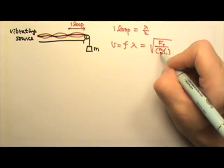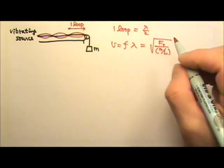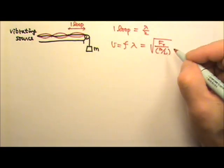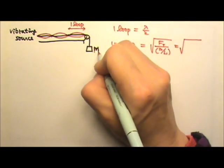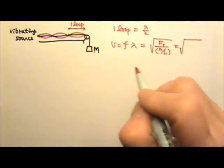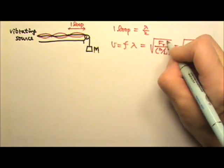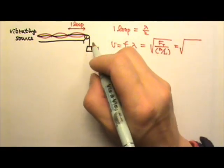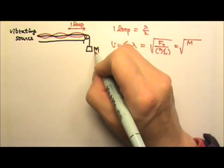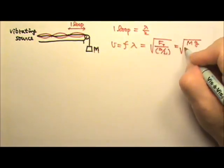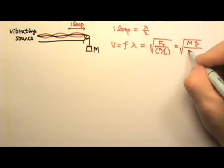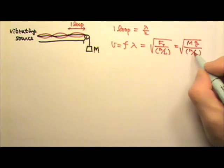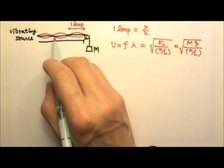Now this mass is not the same as this hanging mass. This is the mass of the string per unit length. Maybe I should use a different M over here. Let me use a capital M right there for this box. That means the tension in the string is the capital M, the mass of the box, times g, because that's the weight that provides the tension.